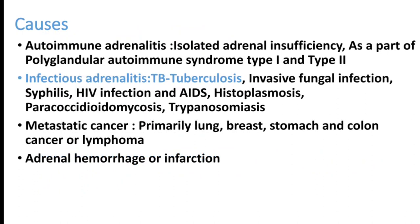The most important cause of adrenal failure worldwide is autoimmune adrenalitis — autoimmune destruction of the adrenal gland — which can present as isolated adrenal deficiency or as part of polyglandular autoimmune syndrome type 1 or type 2. However, in India, TB adrenalitis is the commonest cause. A TB patient presenting with acute hypotension in the emergency room should be suspected of adrenal insufficiency. Other causes of adrenalitis include fungal infections (especially in HIV patients), syphilis, HIV itself, histoplasmosis, and trypanosomiasis.